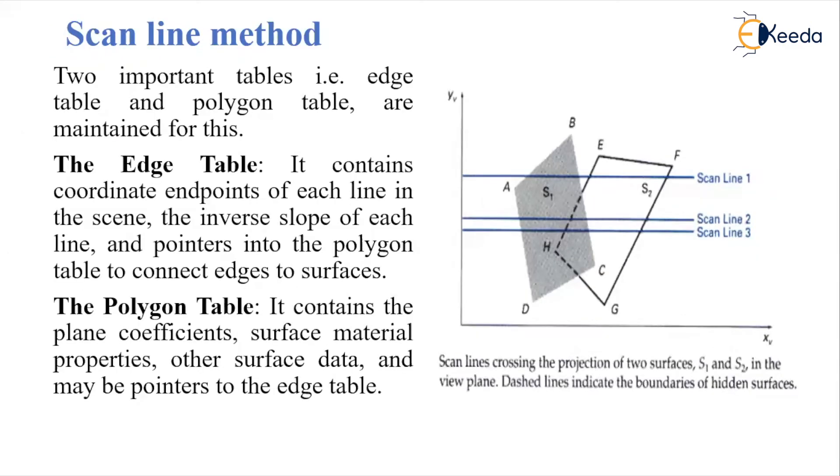There are two important tables: the edge table and polygon table, which we maintain for the scanline method. The edge table contains the coordinate endpoints of each line and pointers into the polygon table to connect edges to surfaces.